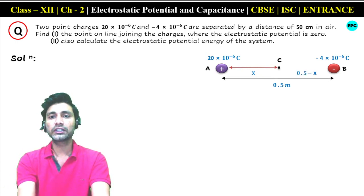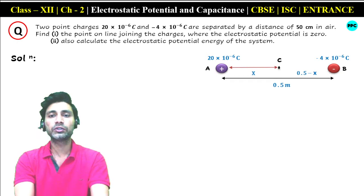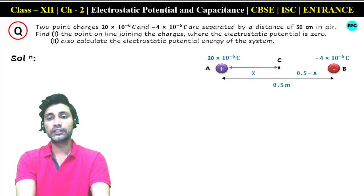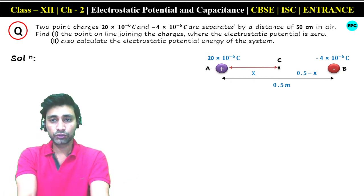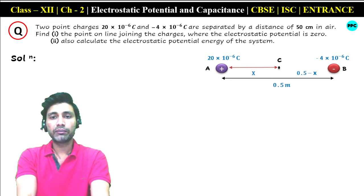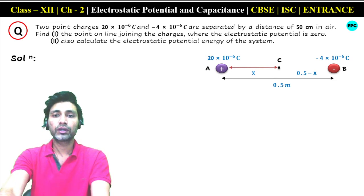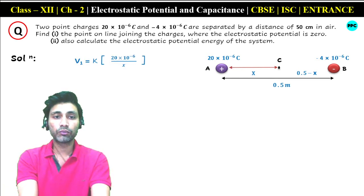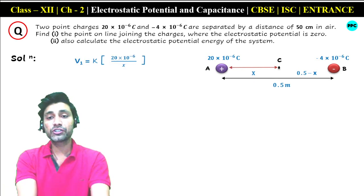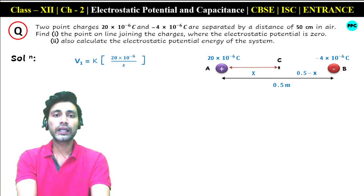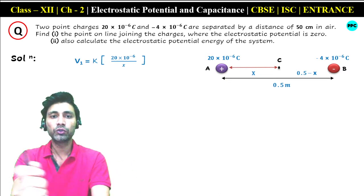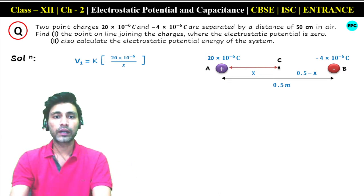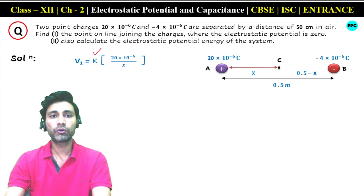So students, if point C is at distance X from A, then the distance from B is 0.5 minus X. A to B is 0.5 meter. So due to charge 20×10⁻⁶ coulomb, how much electrostatic potential is V1? The potential is KQ upon R — we need the charge and the distance to that point, and K is the electrostatic force constant.